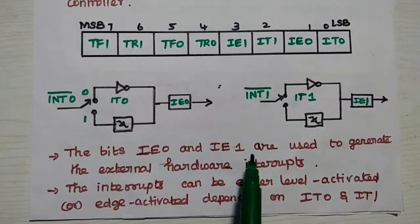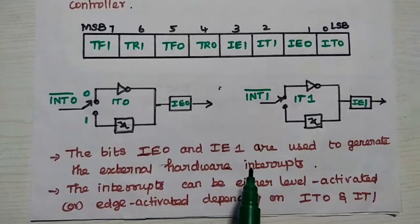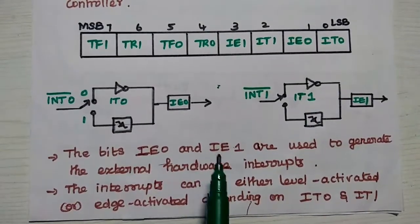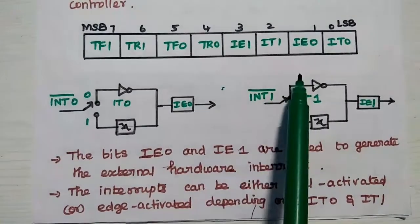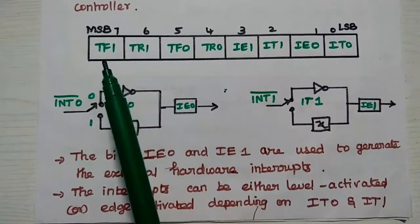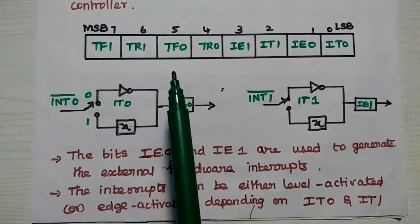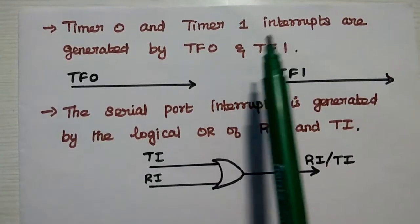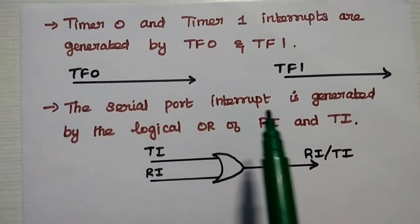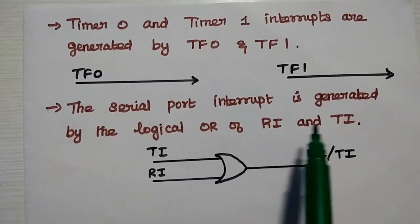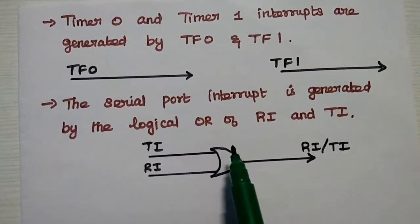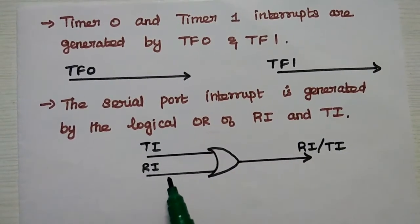The bits IE0 and IE1 are used to generate the external hardware interrupts. The interrupts can be either level activated or edge activated depending on IT0 and IT1 bits. These four bits are used to generate the external hardware interrupts. TF0 and TF1 bits are used to generate the timer overflow interrupts — timer 0 and timer 1 interrupts are generated by TF0 and TF1 respectively. The serial port interrupt is generated by the logical OR of the RI and TI bits.